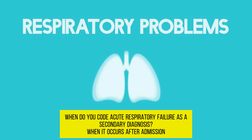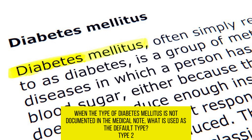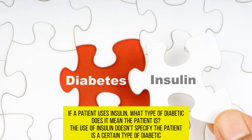When do you code acute respiratory failure as a secondary diagnosis? When it occurs after admission. When the type of diabetes mellitus is not documented in the medical note, what is used as the default type? Type 2. If a patient uses insulin, what type of diabetic does it mean the patient is? The use of insulin does not specify that the patient is a certain type of diabetic.